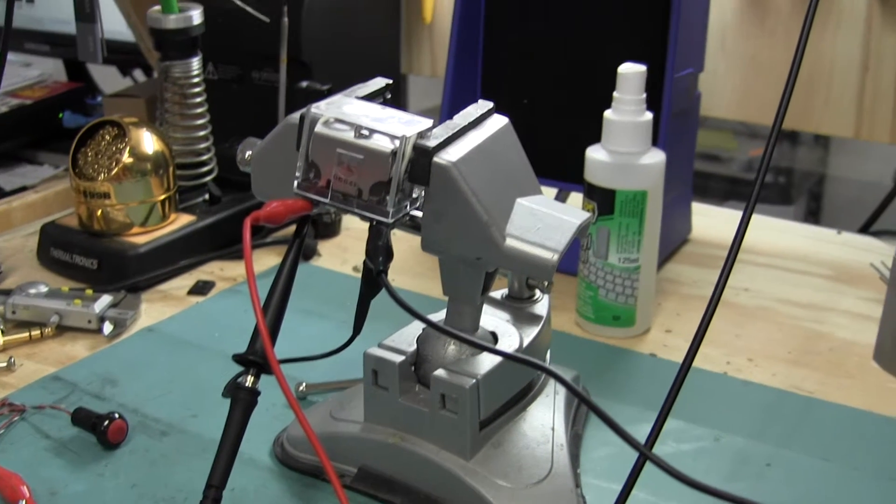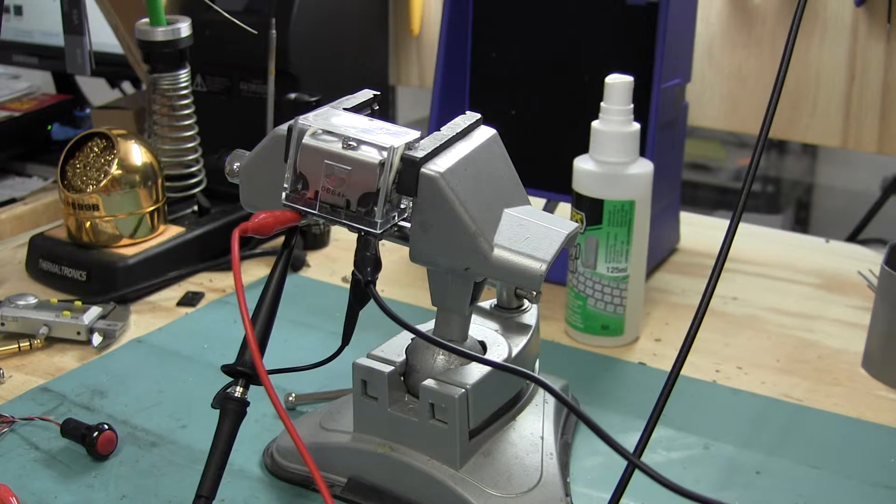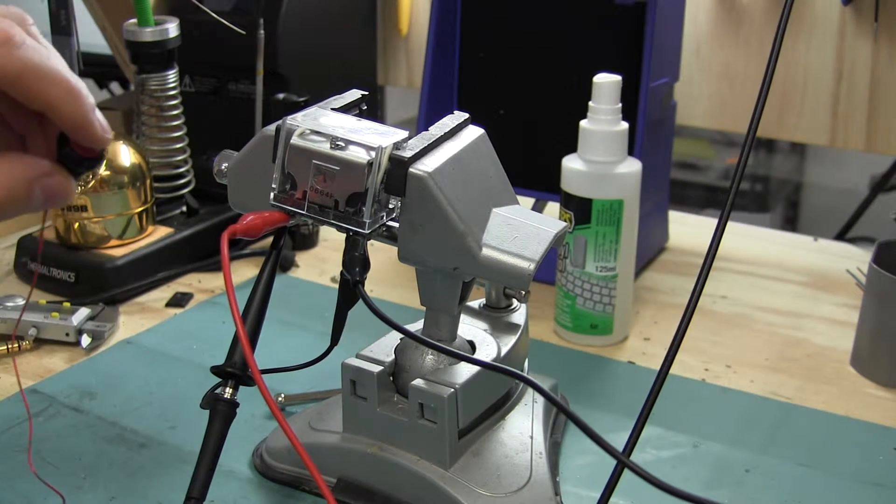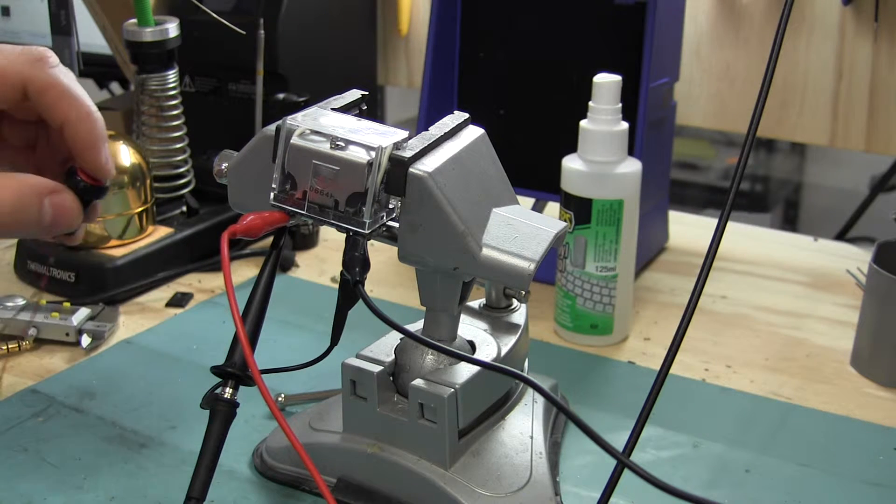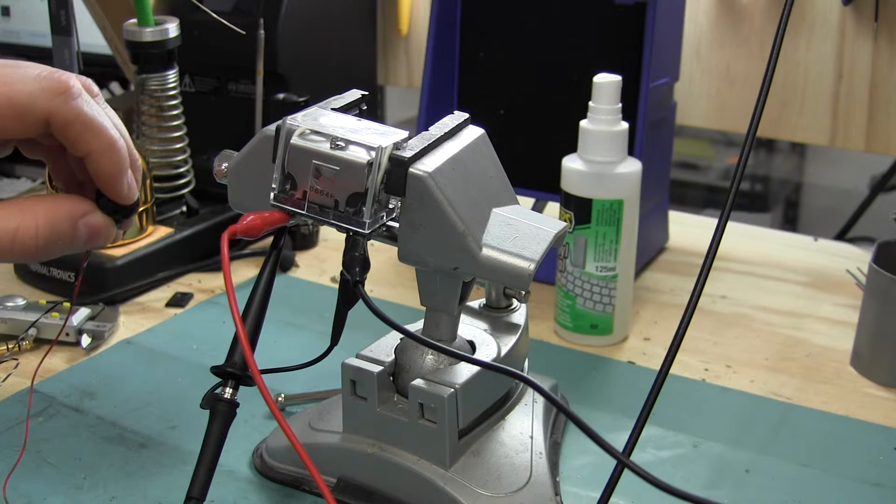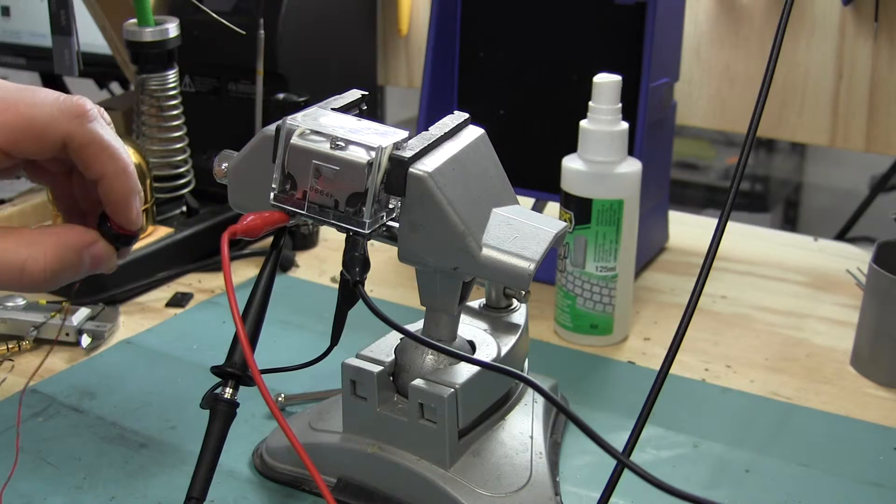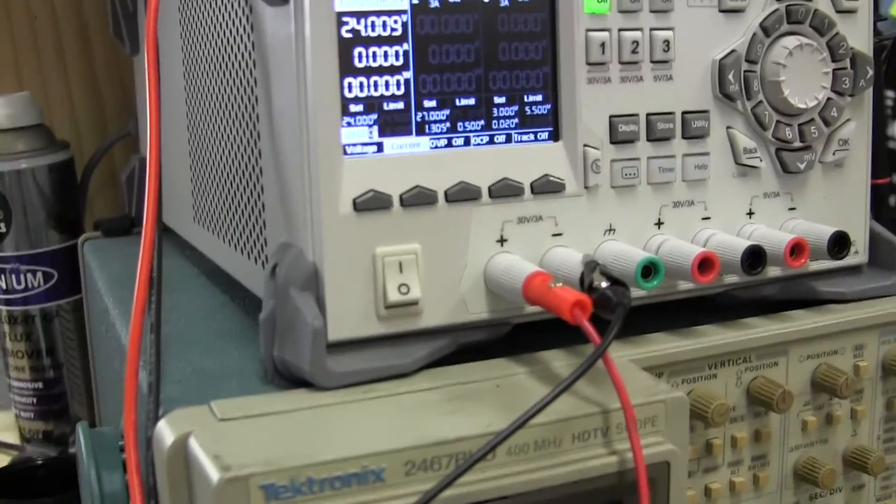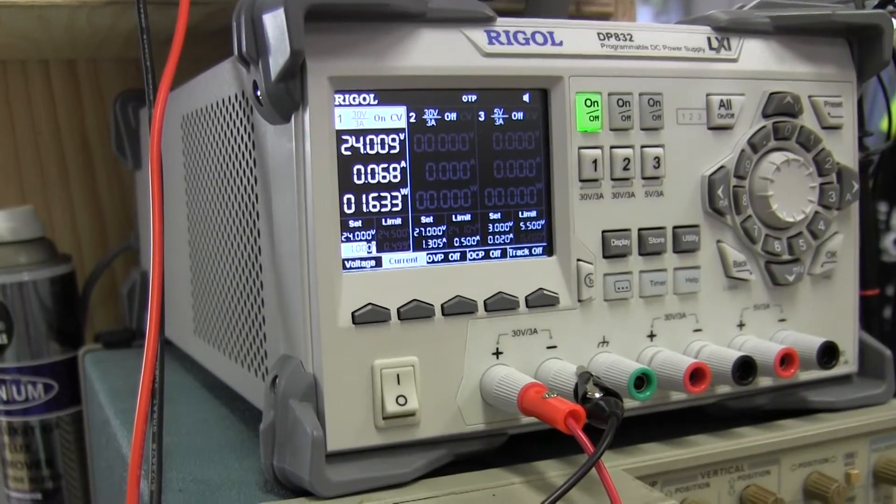What we're going to show you is the difference with a diode and without, and maybe why the diodes failed in your operation. When I press the switch, you'll hear the relay click. You can see it's working, and on the power supply, you can see the current go up.